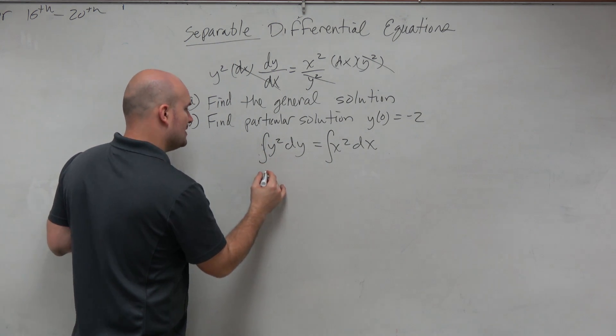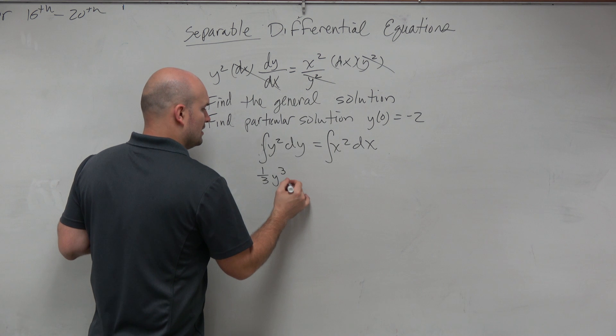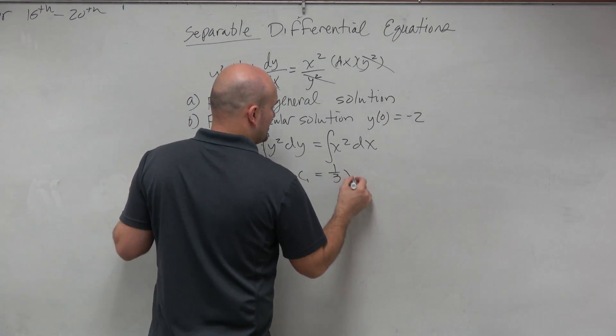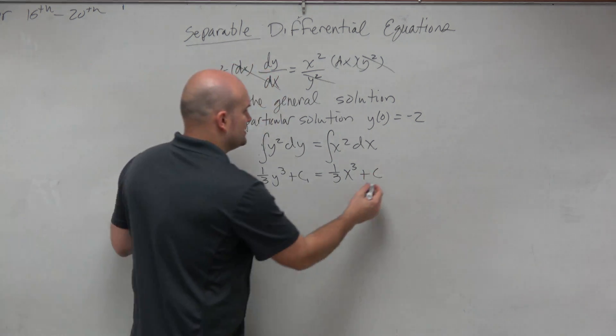So when I integrate here, I'm going to have 1/3 y cubed plus c. And then this one's going to be 1/3 x cubed plus c. Let's call that c2.